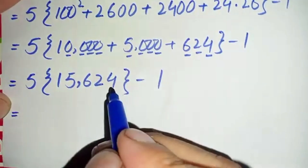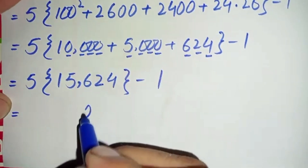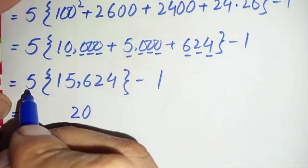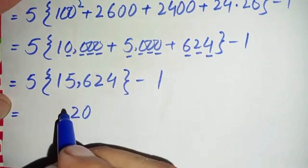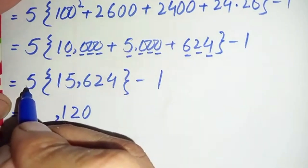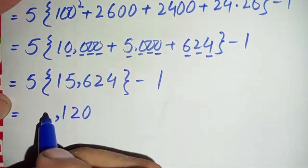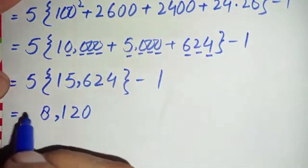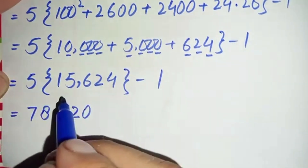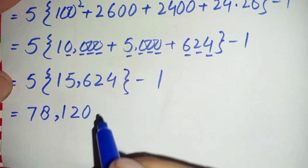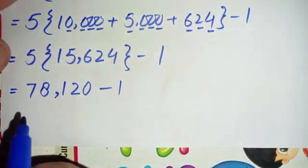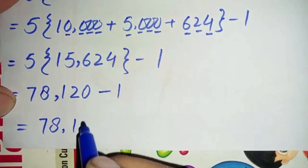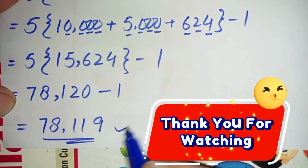Starting from the ones position: 5 times 4 is 20, write 0, carry 2; 5 times 2 is 10, plus 2 is 12, write 2, carry 1; 5 times 6 is 30, plus 1 is 31, write 1, carry 3; 5 times 5 is 25, plus 3 is 28, write 8, carry 2; 5 times 1 is 5, plus 2 is 7. So the product of these two numbers gives 78,120, minus 1. Finally, the subtraction gives 78,119. So this is our final answer.